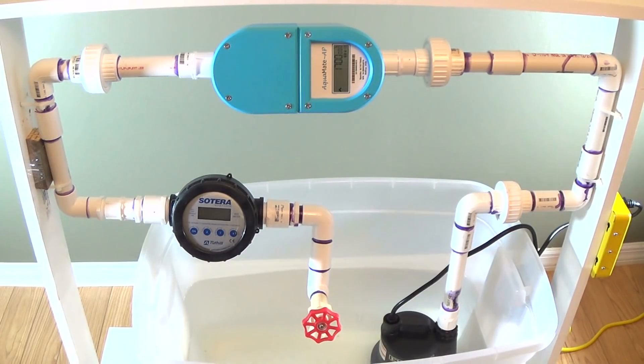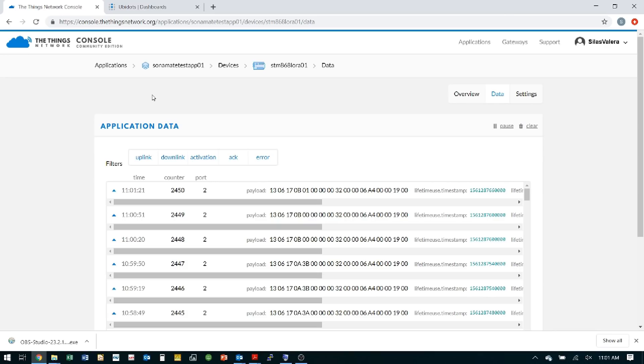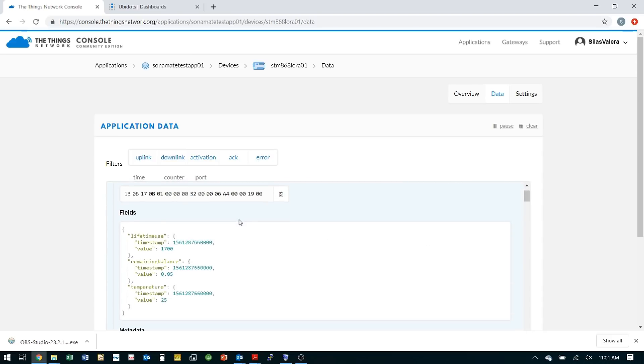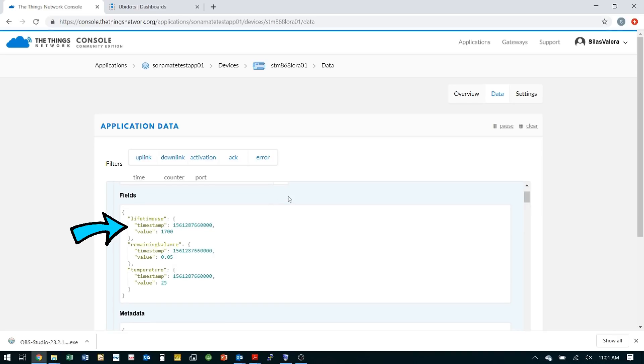Let me switch the screen to show the cloud data server window. We can see how the data packets are being received every 30 seconds and the decoded data package shows the actual data that is a lifetime usage of 1,700,000 liters and remaining balance of 50 liters.